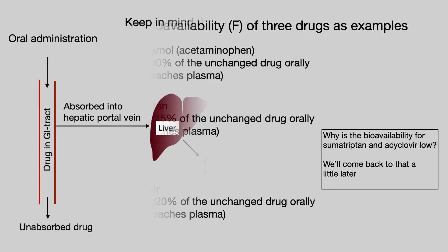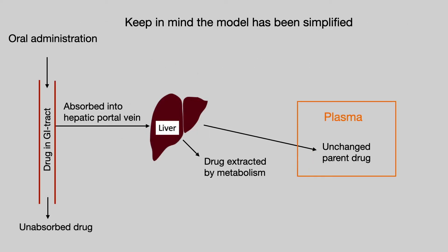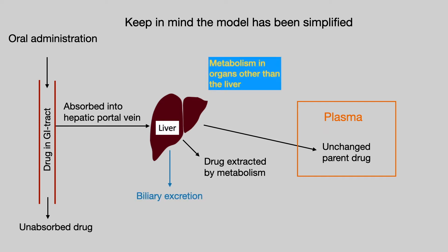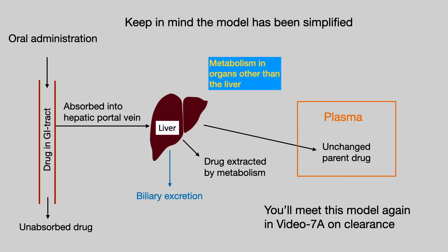We'll return to our model, keeping in mind that it has been simplified. The liver is not the only organ that can metabolize a drug, and there is actually another route out of the liver through biliary excretion — but we're not going to worry about those in our simplified model. You will meet this model again in video 7a when we encounter clearance.